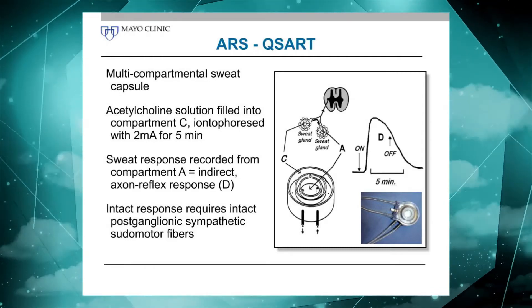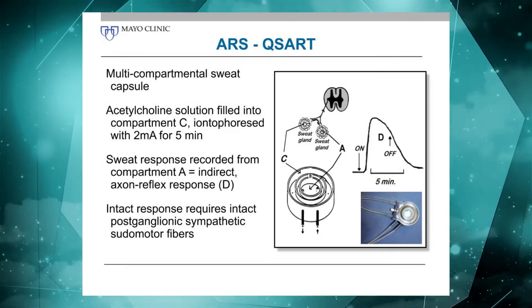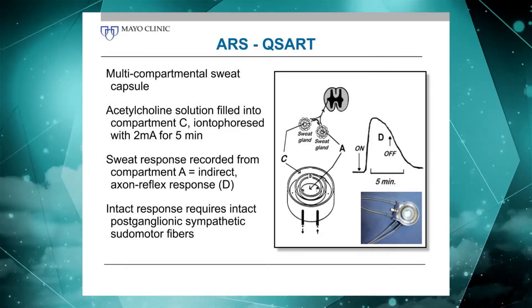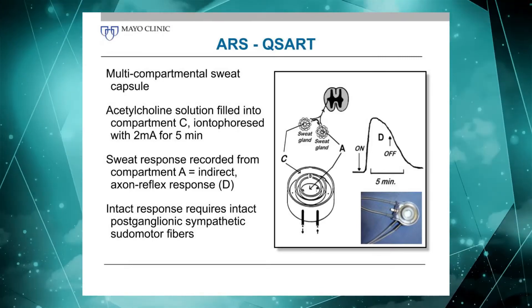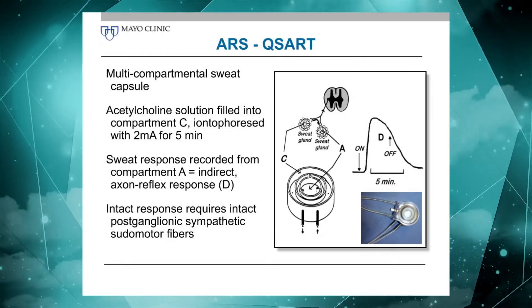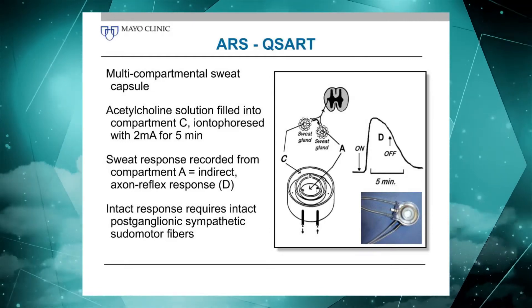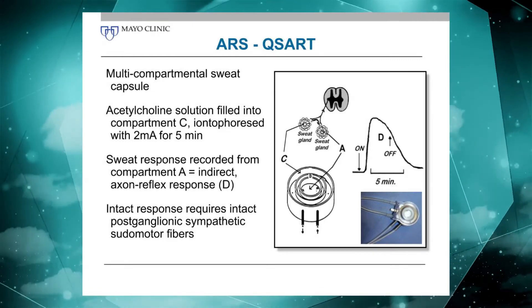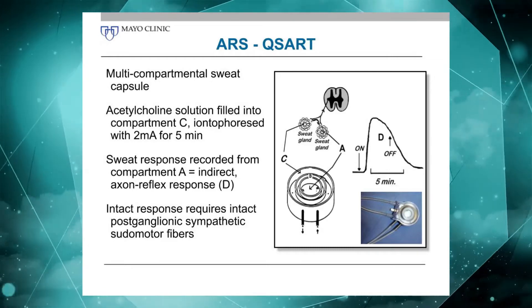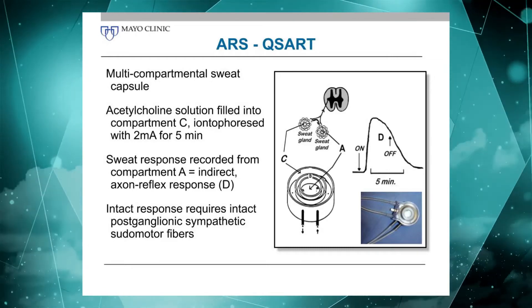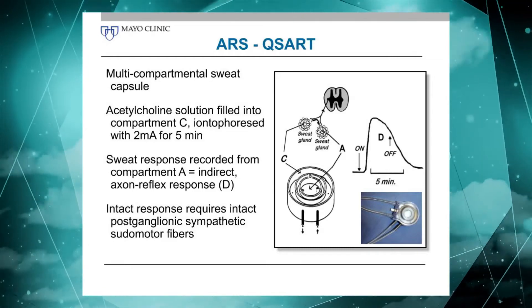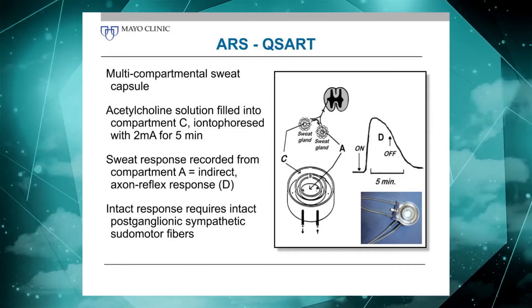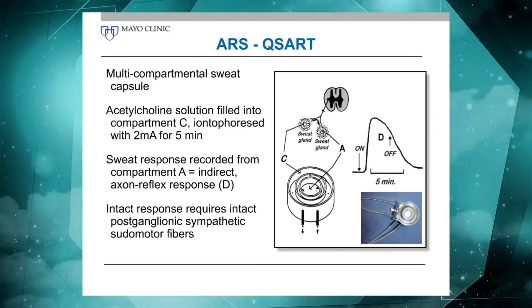We're basically stimulating a peripheral axon that then travels a distance to a different set of sweat glands where it induces a sweat response. And that sweat response requires that the postganglionic sympathetic fiber is intact. That's where the axon reflex test comes from and is superior to a direct stimulation of the sweat gland.